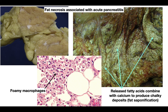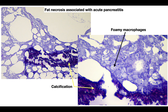With fat necrosis, commonly associated with trauma to the breast or acute pancreatitis. At the top left we see pancreas with chalky deposits from acute pancreatitis; to the right is a striking example of greater omentum with little yellow areas produced by release of pancreatic enzymes. Released fatty acids combine with calcium to produce chalky deposits — fat saponification. At the bottom you see residual adipose cells and foamy macrophages from destruction of adipose cells. Here's another microscopic of fat necrosis from acute pancreatitis — low power to the left, higher power to the right — showing calcification and foamy macrophages with spaces representing remnants of the adipose cells.